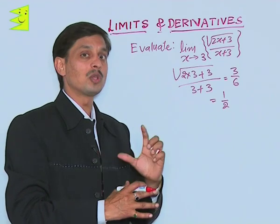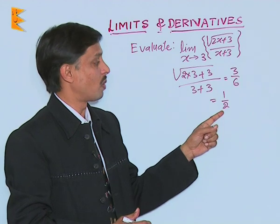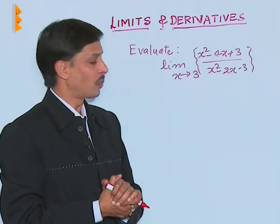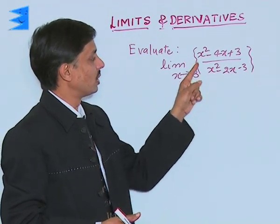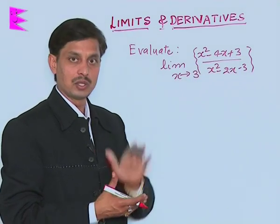Hence, no procedure of finding the left limit or right limit will be followed and answer of this problem is 1 by 2. Now I want to discuss with you one more problem related to limit. It is limit x tending to 3: x square minus 4x plus 3 upon x square minus 2x minus 3.